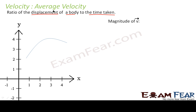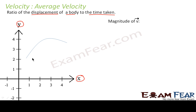Let us first talk about the magnitude. We take this graph — we will use the same graph to make you understand all the concepts. Here the y-axis and x-axis represent the motion of the particle, or the change in position of the particle along the x and y axes. So this shows the motion, and the x and y positions keep changing with time.